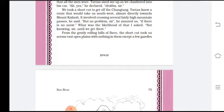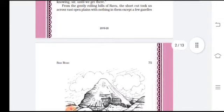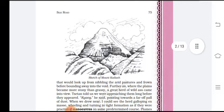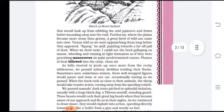From the gently rolling hills of Ravu, the shortcut took them across vast open plains with nothing in them except a few gazelles. Rolling hills have a symmetrical pattern in their formation. The plains were an expansive open area. At first they saw gazelles — deer-like animals. The narrator mentions a sketch of Mount Kailash visible nearby. The gazelles looked up from nibbling the arid pasture — grazing on dry, sparse grass.